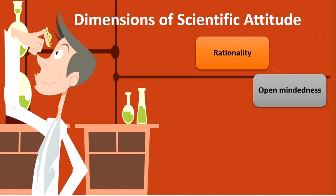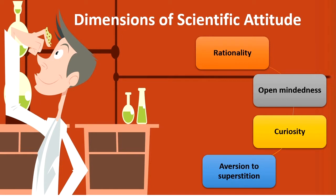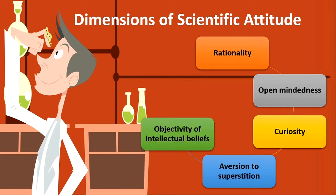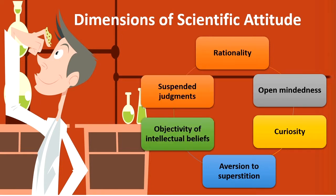After discussing the characteristics of scientific attitude, you must have developed a basic understanding of what scientific attitude is and how a person with it behaves. Let us move further towards the dimensions of scientific attitude. There are six dimensions: rationality, open-mindedness, curiosity, aversion to superstitions, objectivity of intellectual beliefs, and suspended judgment.